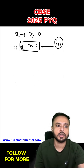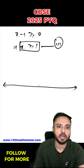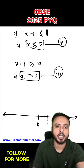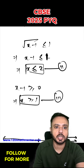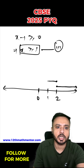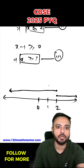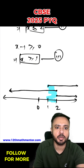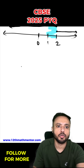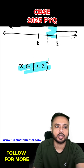Now we represent all three solutions on the number line, with points at 0, 1, and 2. The first inequality gives x ≥ 2, the second gives x ≤ 2, and the third gives x ≥ 1. The common solution is clearly between 1 and 2, both values included. So the domain of the function is x ∈ [1, 2]. This is the desired answer.